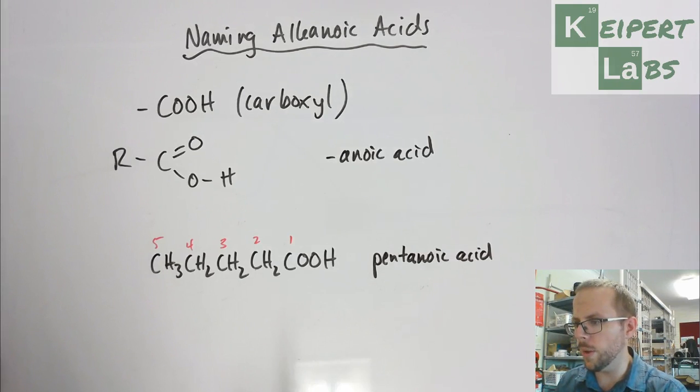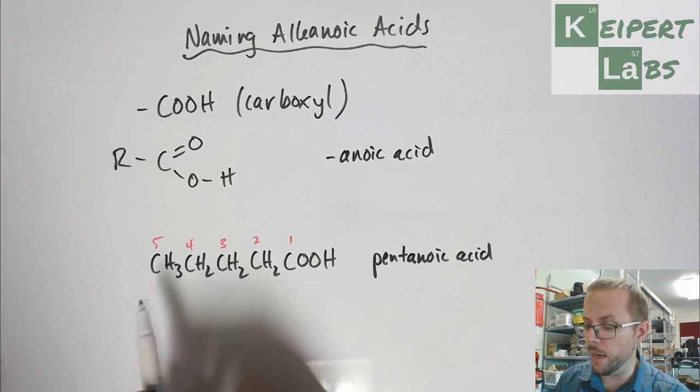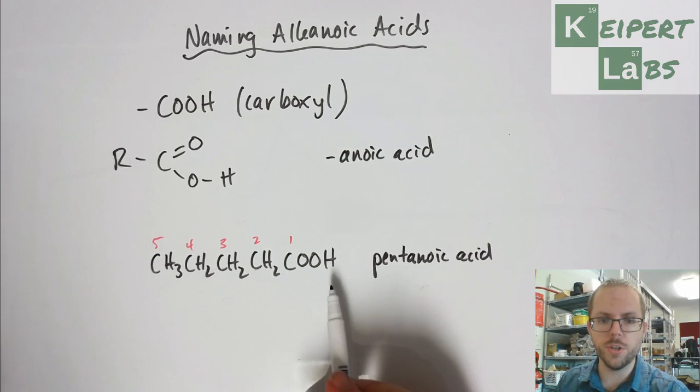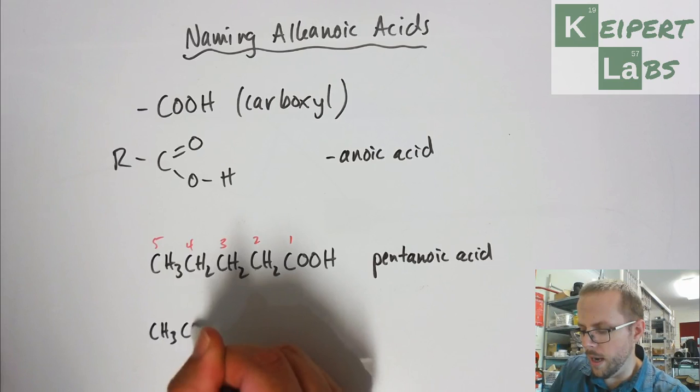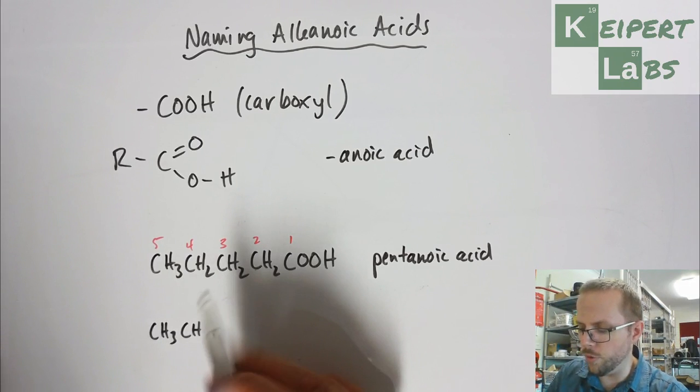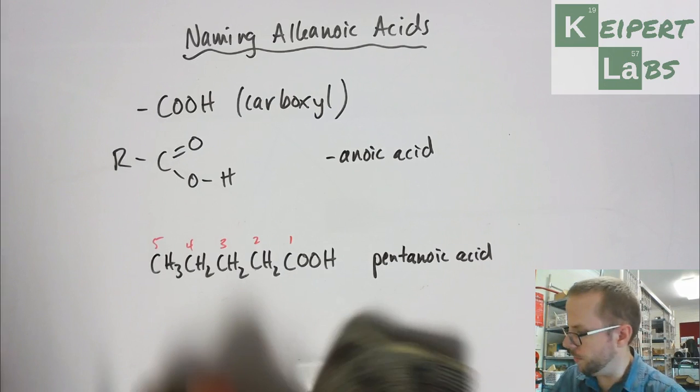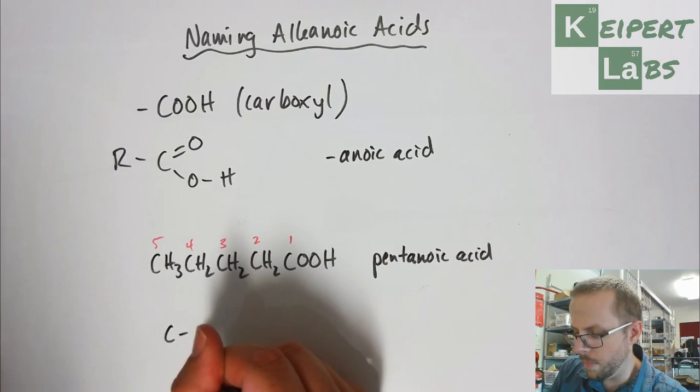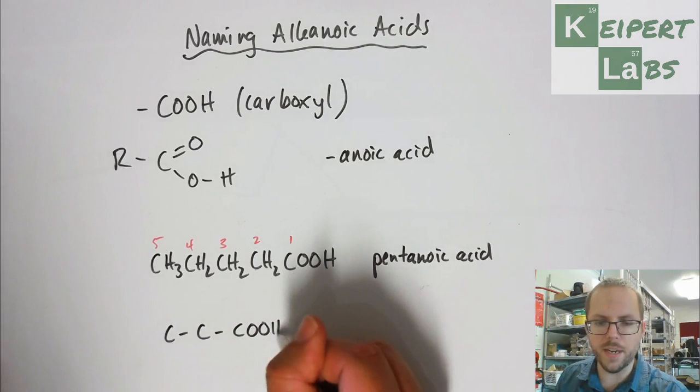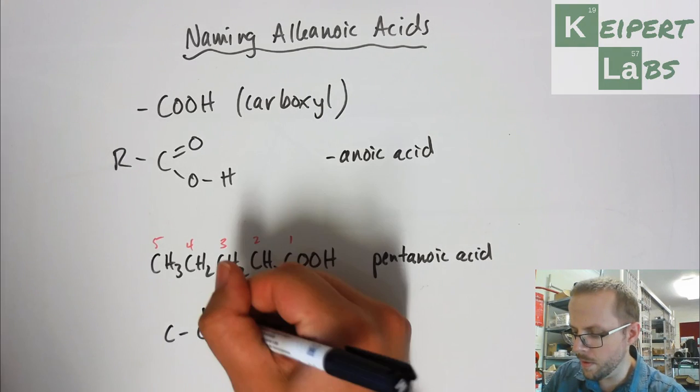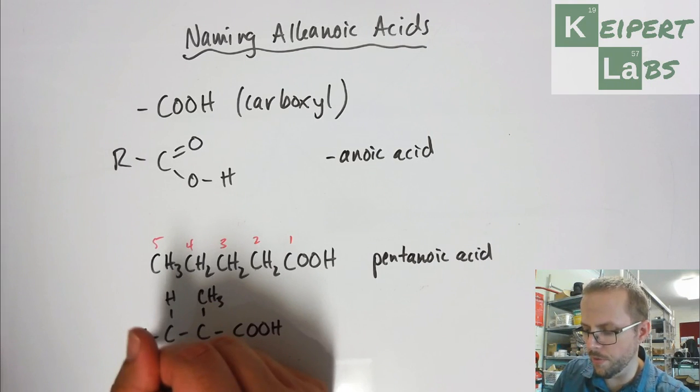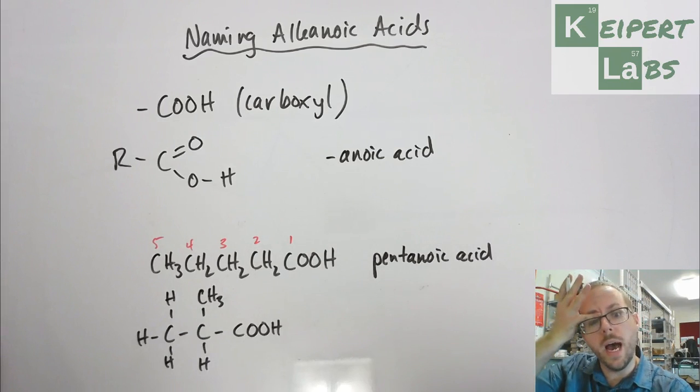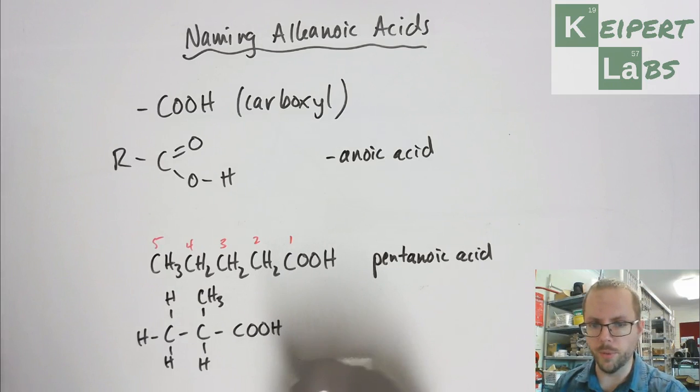Now let's have a quick look at a branched alkanoic acid. The dot point here only means you only need to be able to name acids like this. But I want to show you why being able to number these is important. Let's say we've got—actually, I might draw it out a little bit more. I'll use the full structural formula to give you an idea here. I'm going to write that as COOH. It's kind of a hybrid or mashup of full and abbreviated structures, but you can see I'm working within a small space here.